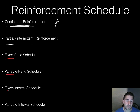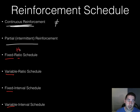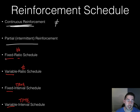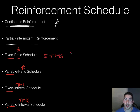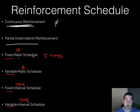There's fixed and variable schedules. Fixed means after a certain set number or amount. Ratio means number of responses; interval means time. Fixed ratio means reinforcement after a certain number of responses. For example, every five times a student raises his hand to speak in class, I give him a cookie. That's a fixed ratio schedule.